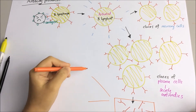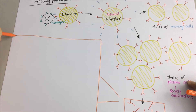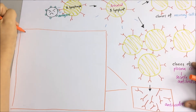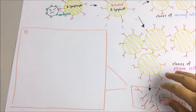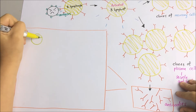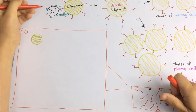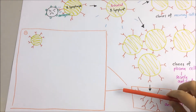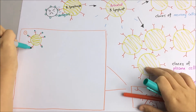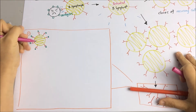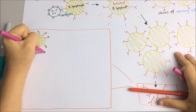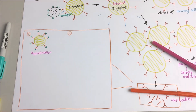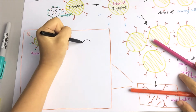Now let's look at how antibodies can destroy pathogens. Antibodies can recognize the antigen and clump pathogens together, making it easier for the phagocytes to catch and kill the microorganisms. These antibodies are known as agglutinins.